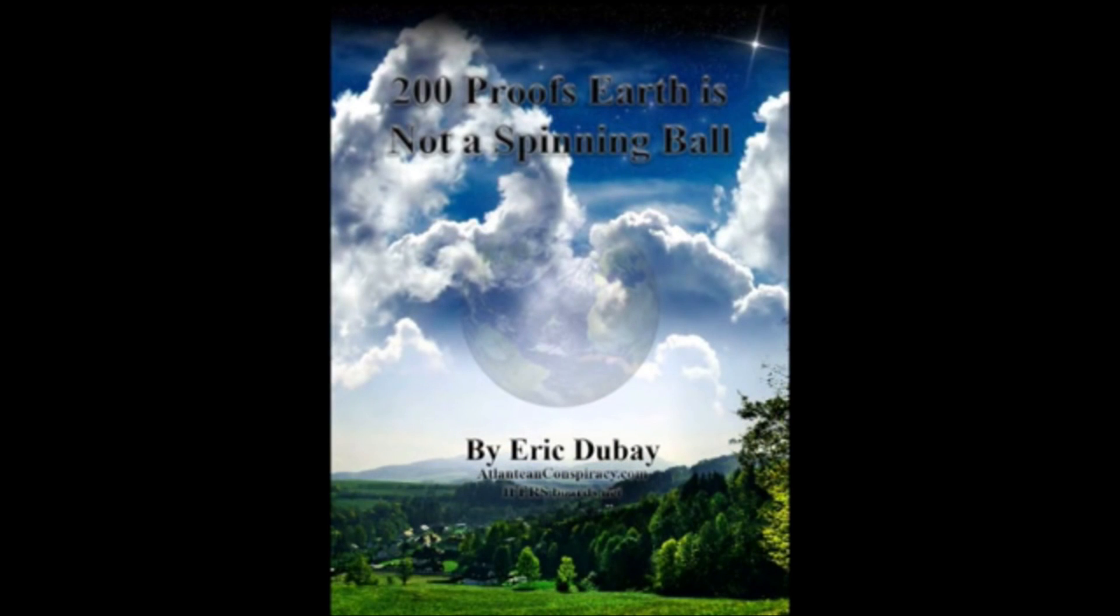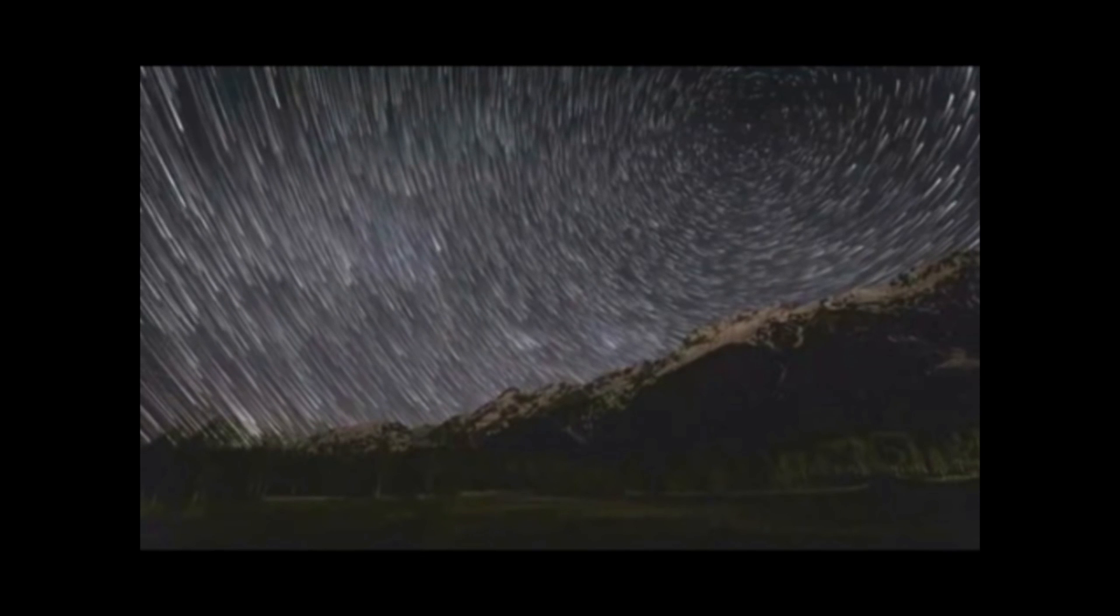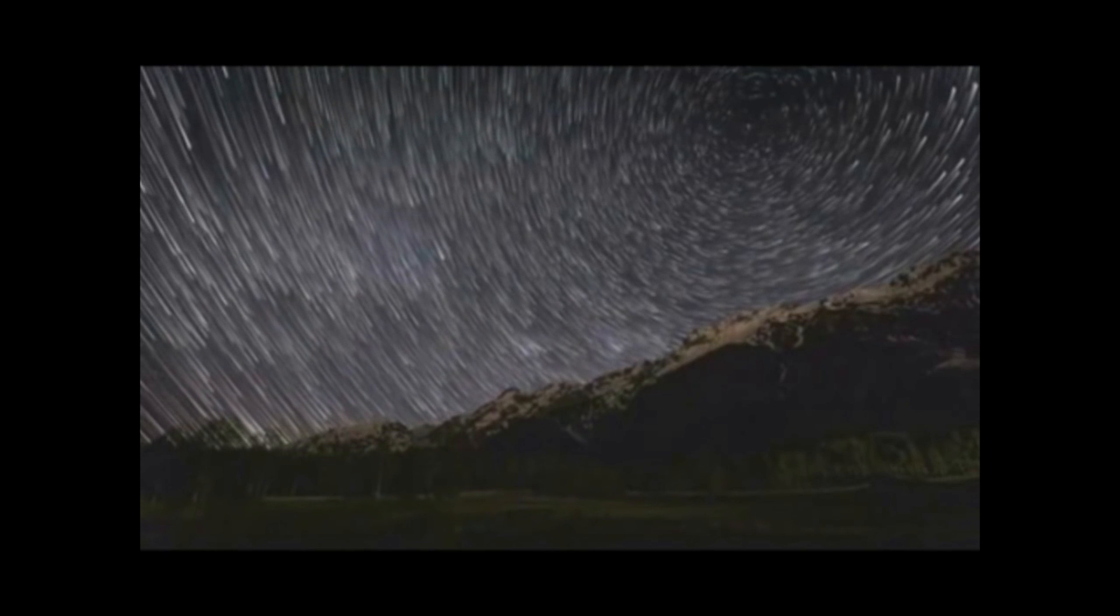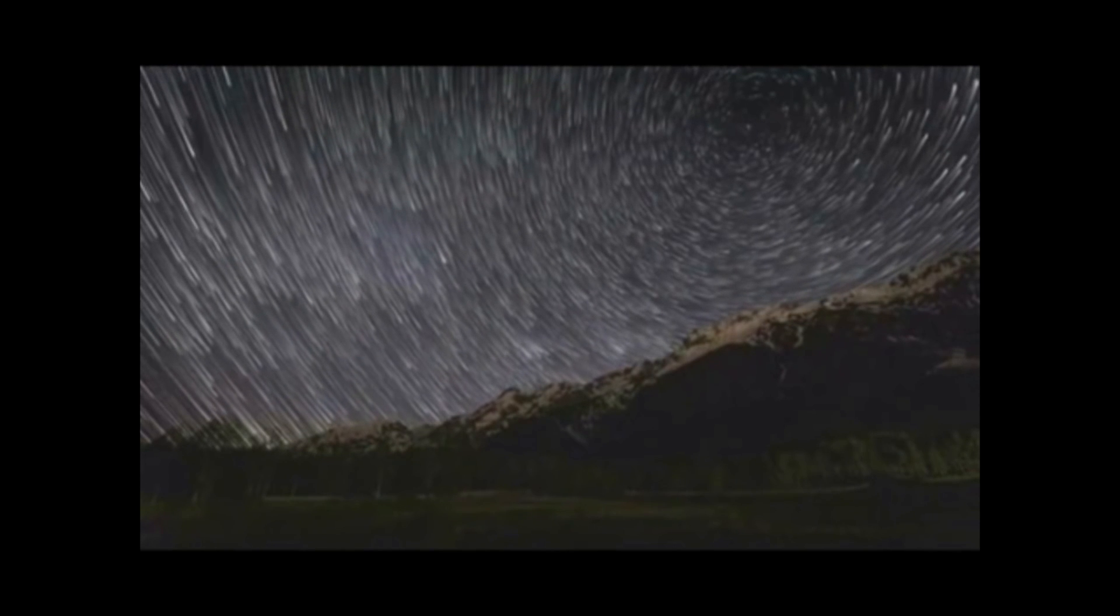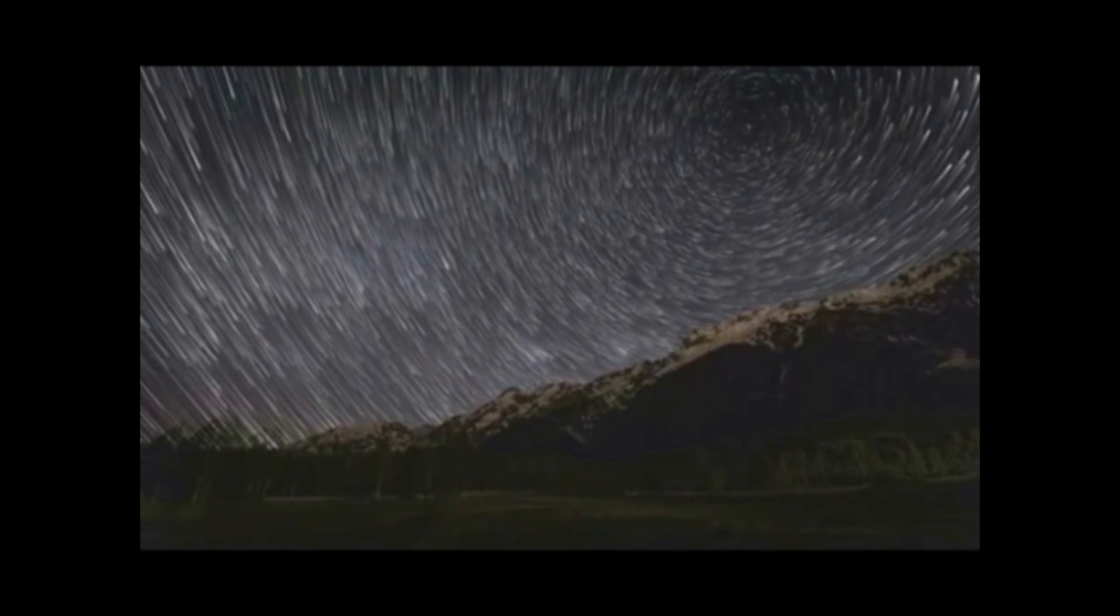200 Proofs Earth is Not a Spinning Ball by Eric Dubé. Proof 20: If earth were truly constantly spinning eastwards at over a thousand miles per hour, vertically fired cannonballs and other projectiles should fall significantly due west.